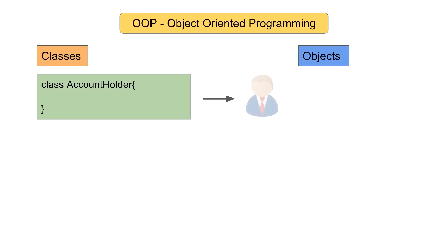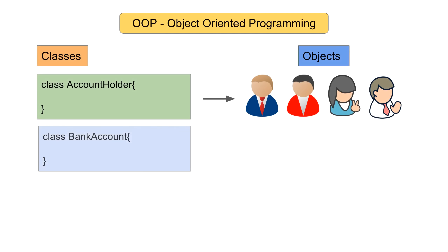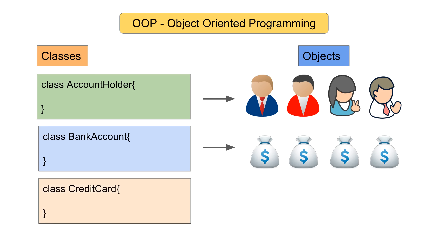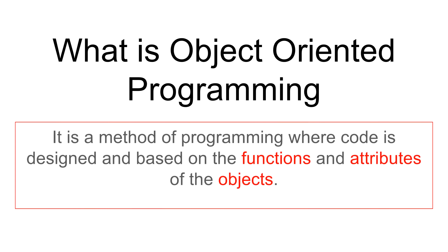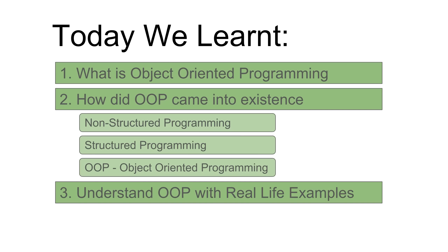Using the account holder class we can create multiple account holders. Similarly, using the bank account class we can create multiple bank accounts, and for credit card we can create multiple credit cards. These classes will have functions that can talk to each other. Now you can go back to the bookish definition and understand what it means: the programming is based on functions and attributes of the objects. I hope the object oriented concepts are now very clear. I will meet you in the next session. Thanks for watching.